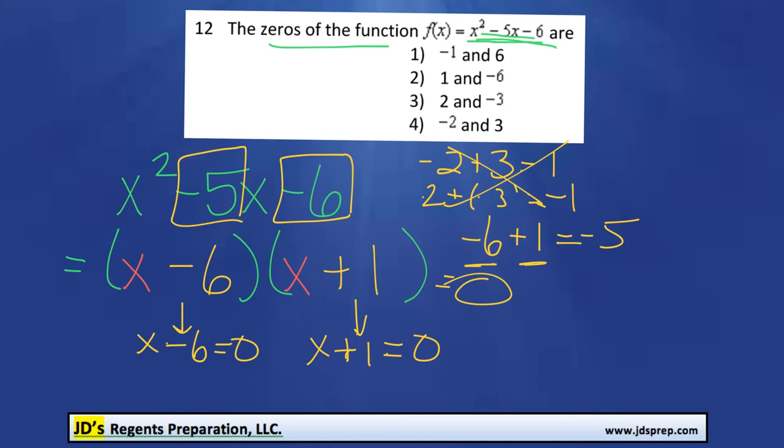So if x minus 6 equals 0, that means x has to be 6. And if x plus 1 equals 0, that means x has to be negative 1. So those are our two zeros, 6 and negative 1, which is the first option.